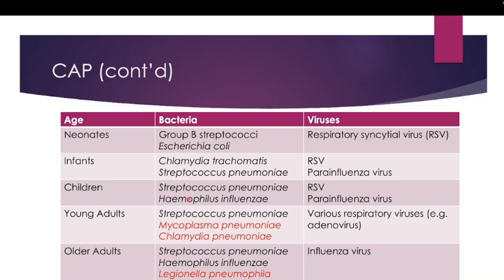For children, the main causative agents are Streptococcus pneumoniae and Haemophilus influenzae, with RSV and parainfluenza virus as viral agents. In young adults, causative agents include Streptococcus pneumoniae, Mycoplasma pneumoniae, Chlamydia pneumoniae, and various respiratory viruses such as adenovirus. For older adults, causative agents include Streptococcus pneumoniae, Haemophilus influenzae, Legionella pneumophila, and influenza virus. Mycoplasma pneumoniae, Chlamydia pneumoniae, Legionella pneumophila, and Chlamydia psittaci will be discussed in the next lecture under atypical pneumonia.